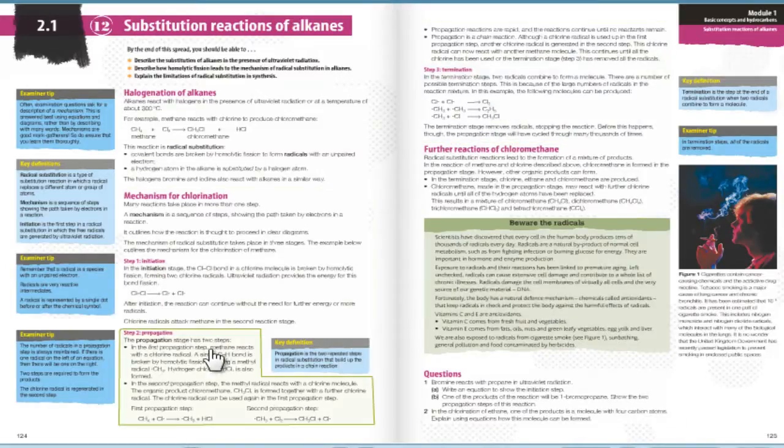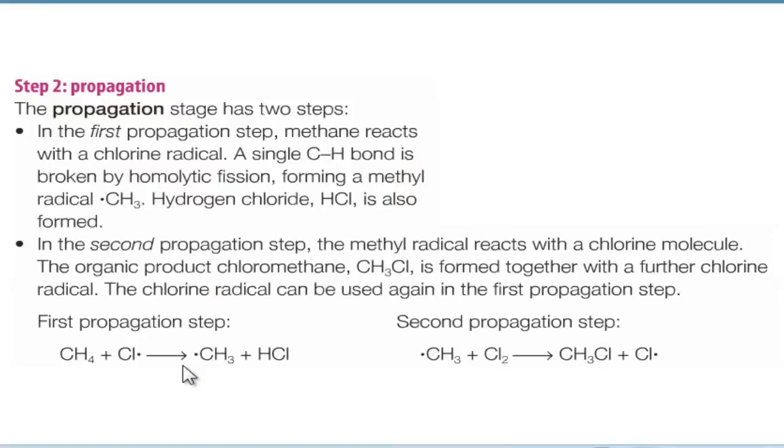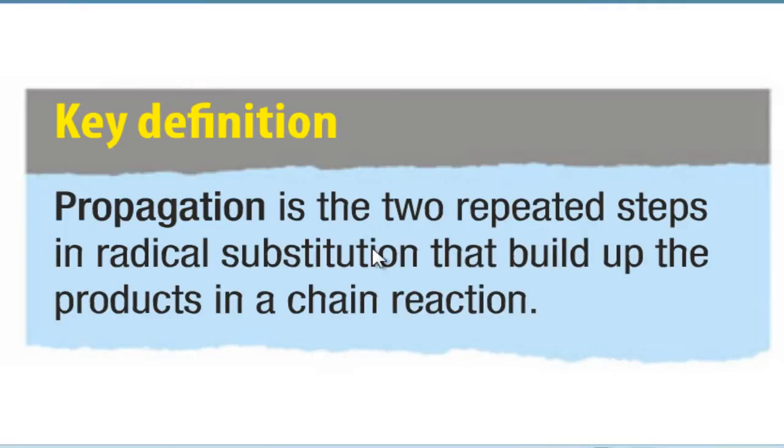Step two is propagation. Propagation has two steps. In the first propagation step, the methane reacts with a chlorine radical. A single carbon-hydrogen bond is broken by homolytic fission, and this forms a methane radical CH3 and hydrogen chloride HCl. In the second propagation step, the methane radical reacts with a chlorine molecule. The original organic product chloroethane CH3Cl is formed together with another chlorine radical. CH4 plus Cl makes CH3 dot plus HCl, and the second propagation step is CH3 dot plus Cl2 making CH3Cl plus Cl dot. It's the two repeated steps in radical substitution that build up the products in the chain reaction.